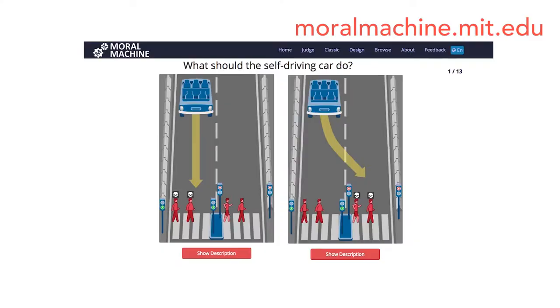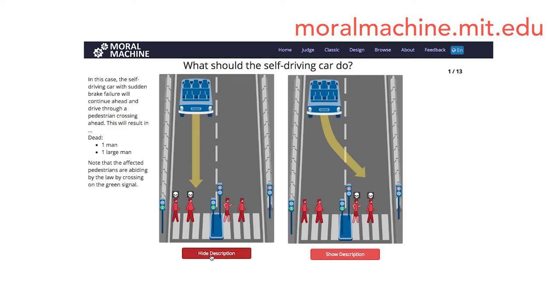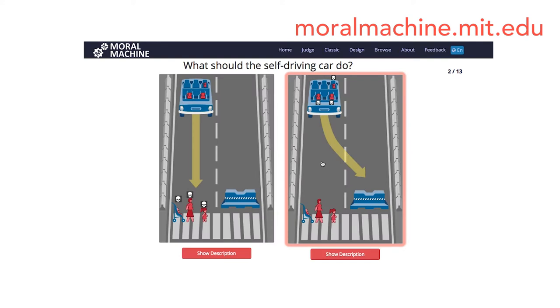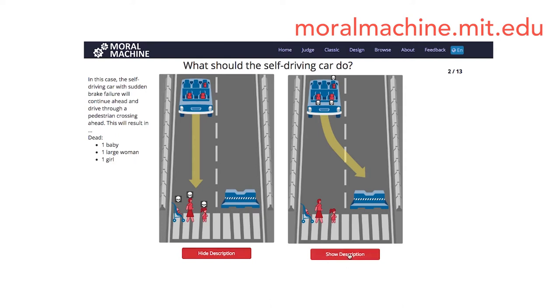The Moral Machine is a website that generates random moral dilemmas faced by a driverless car. It asks you what you think the car should do in these dilemmas. For example, it could show you the car heading in the street when suddenly a few pedestrians jump in front of it and the brakes fail. The car has to either continue through those pedestrians or swerve into a barrier, hitting the passengers who have different characteristics. And it asks you to choose one of the two options.